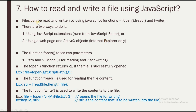The seventh question is: how do you read and write a file using JavaScript? Files can be read and written using the functions fOpen, fRead, and fWrite. There are two ways to do it: using a JavaScript extension from a JavaScript editor, or using a web page's ActiveX objects (Internet Explorer only). The fOpen function takes two parameters — the file path and the mode: 0 for reading, 3 for writing. It returns -1 if the file is successfully opened.